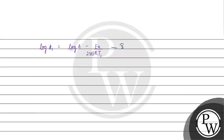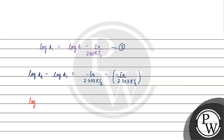Now we will call this equation 2. We will subtract equation 1 from equation 2. Then log k2 minus log of k1 — the log A terms cancel out — giving us Ea by 2.303 R times (1/T1 minus 1/T2). So log(k2/k1) equals Ea by 2.303 R into (1/T1 minus 1/T2).